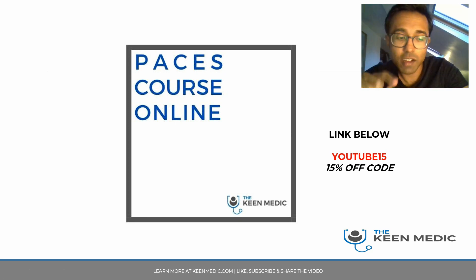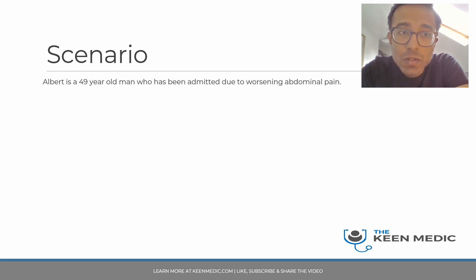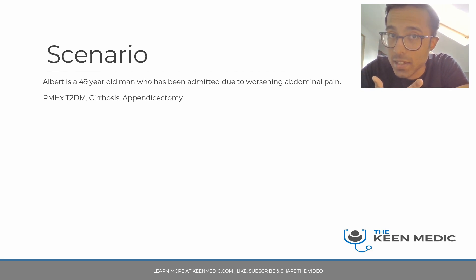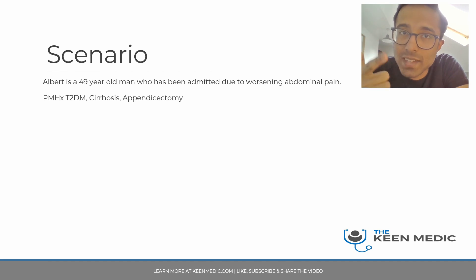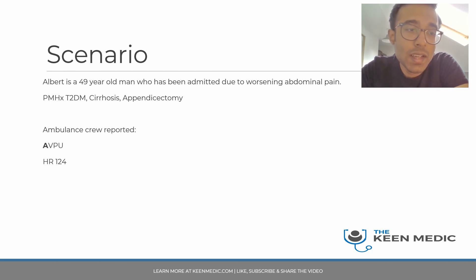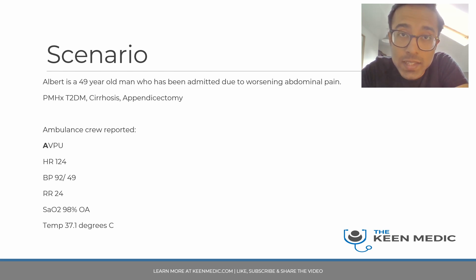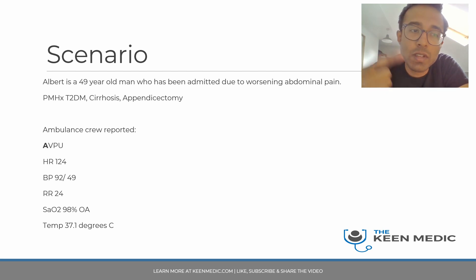Here's the scenario: Albert is a 49-year-old man admitted due to worsening abdominal pain. His past medical history includes type 2 diabetes, cirrhosis, and a previous appendectomy. With the ambulance crew, he is alert, heart rate is 124, blood pressure is low, respiratory rate is 24, saturations are 98% on air, and temperature is 37.1°C.